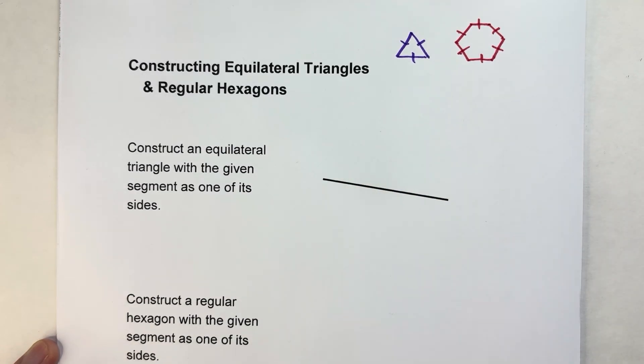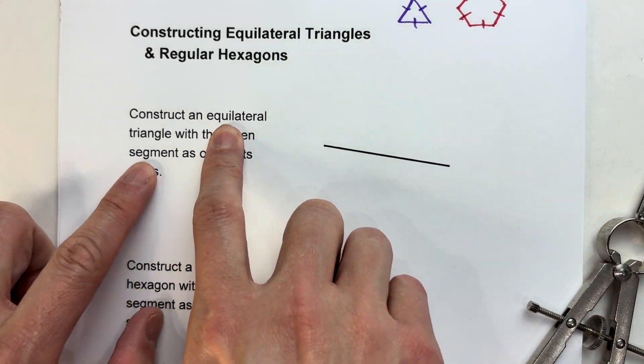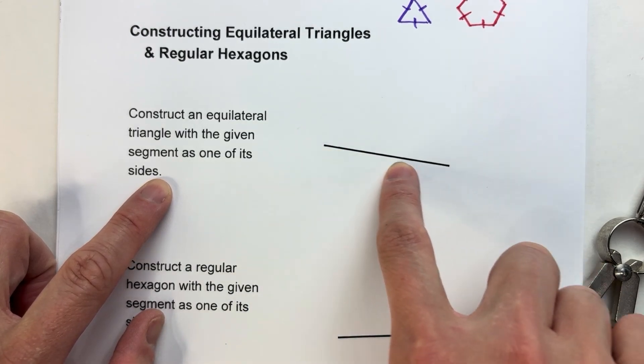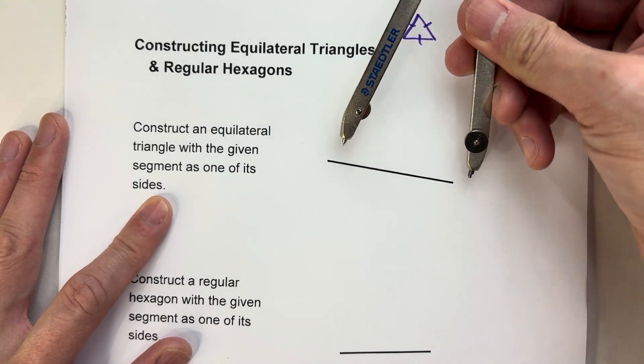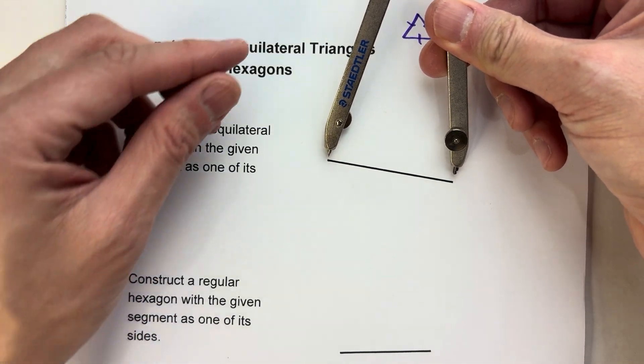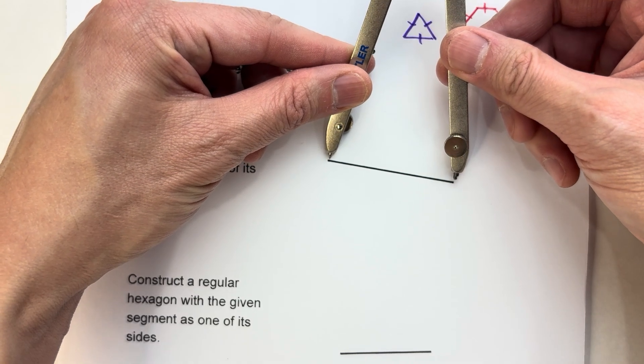We're going to construct this with a compass and straightedge. To construct an equilateral triangle with a segment given to you as one of its sides, take your compass and set it up for the length of that segment. That's one side of the triangle.